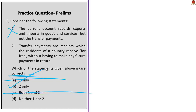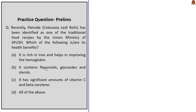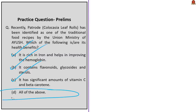The next question asks about Patrode — Colocasia leaf rolls, recently identified as a traditional food recipe by the Union Ministry of AYUSH. The question asks which of the following are its health benefits: it is rich in iron and helps in improving hemoglobin; it contains flavonoids, glycosides, and sterols; it has significant amounts of vitamin C and beta-carotene. The correct answer is option D — all the above.